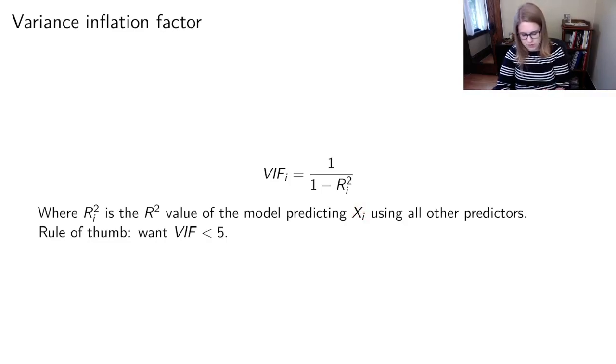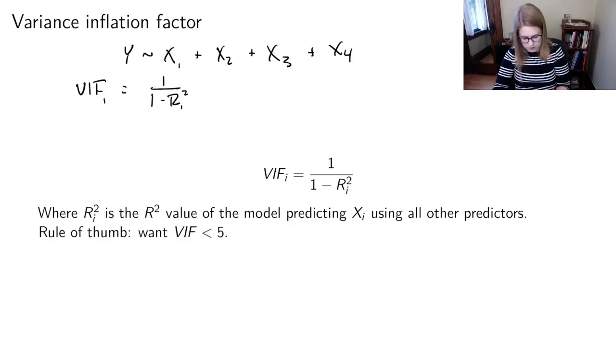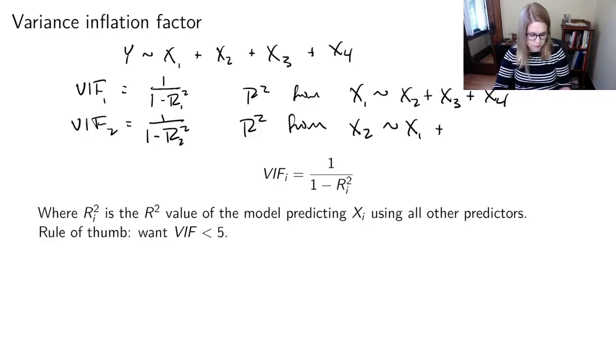So let's imagine that we had Y tilde X1 plus X2 plus X3 plus X4. If we were going to try and find the VIFs for each of these Xs, we could have VIF 1, which would be 1 over 1 minus the R squared 1, which would be the R squared from trying to predict X1 by X2 plus X3 plus X4. And then we would have VIF 2, 1 over 1 minus R2 squared, and that R squared would be from predicting X2 by X1 plus X3 plus X4, etc. And our rule of thumb is we want our variance inflation factor value to be less than 5. If it's greater than or equal to 5, that's a concern for multicollinearity, and we should do something. Probably we should remove at least one of our variables.